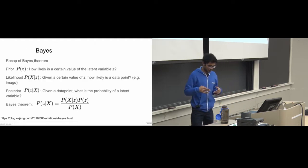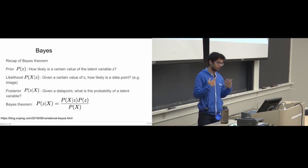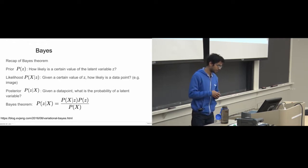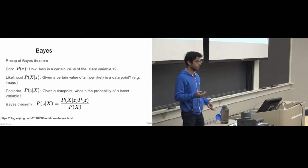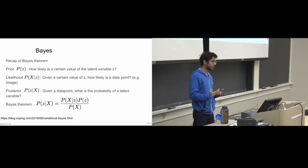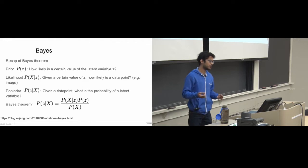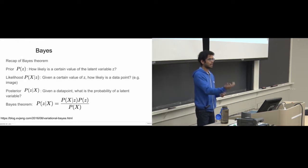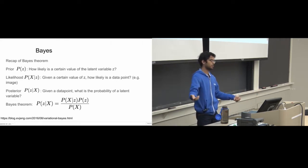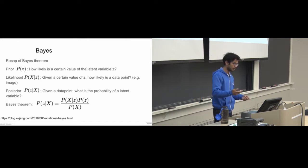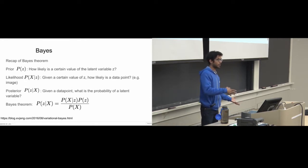The variational autoencoder is a Bayesian approach, so let's recap Bayes' theorem. There are three main terms: the prior, likelihood, and posterior. We define a prior p(z) over the latent variable — how likely is a certain value of z? The likelihood p(x|z) is: given a certain value of z, how likely is a data point? For example, given certain neuron values, how likely is a cat image to be generated? The posterior p(z|x) gives: given an original data point, what is the probability of that latent variable?